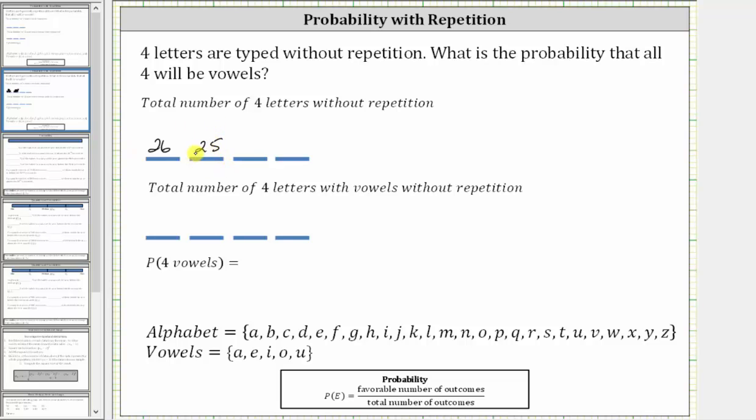Now two letters have been used, which cannot be used again, and therefore there are 24 ways to type the third letter and 23 ways to type the fourth letter.